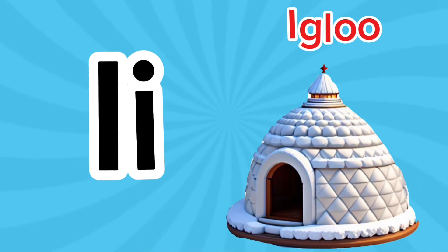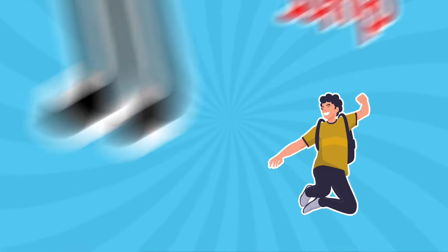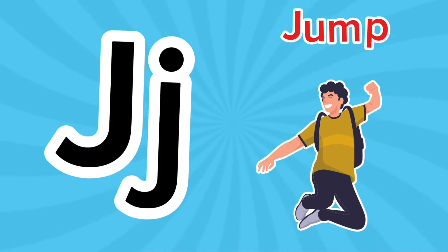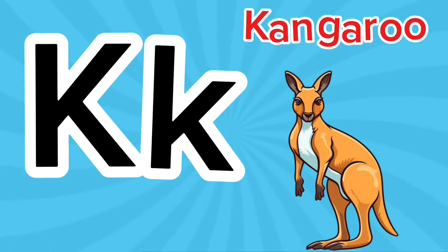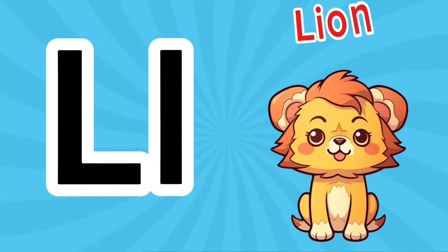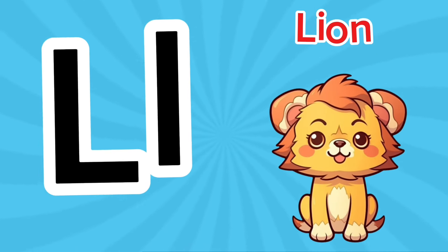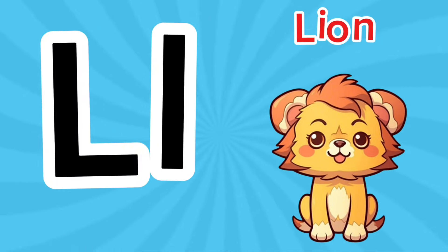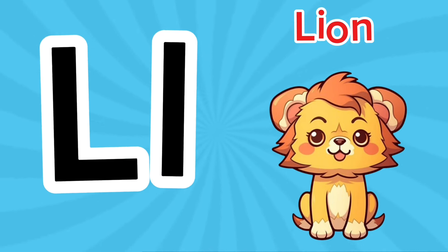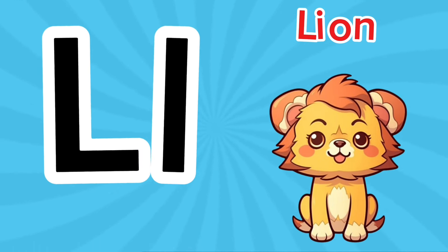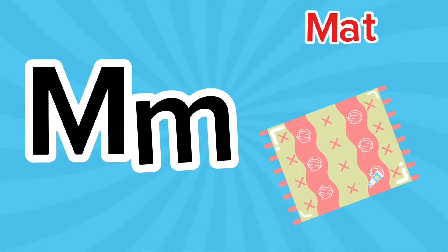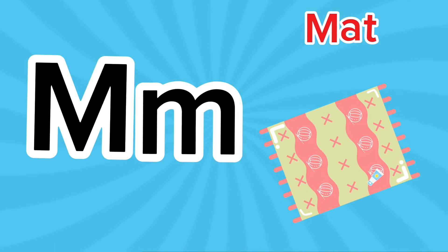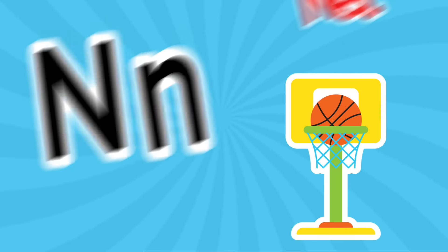I is for igloo, i-i-igloo. J is for jump, j-j-jump. K is for kangaroo, k-k-kangaroo. L is for lion, l-l-lion. M is for mat, m-m-mat.